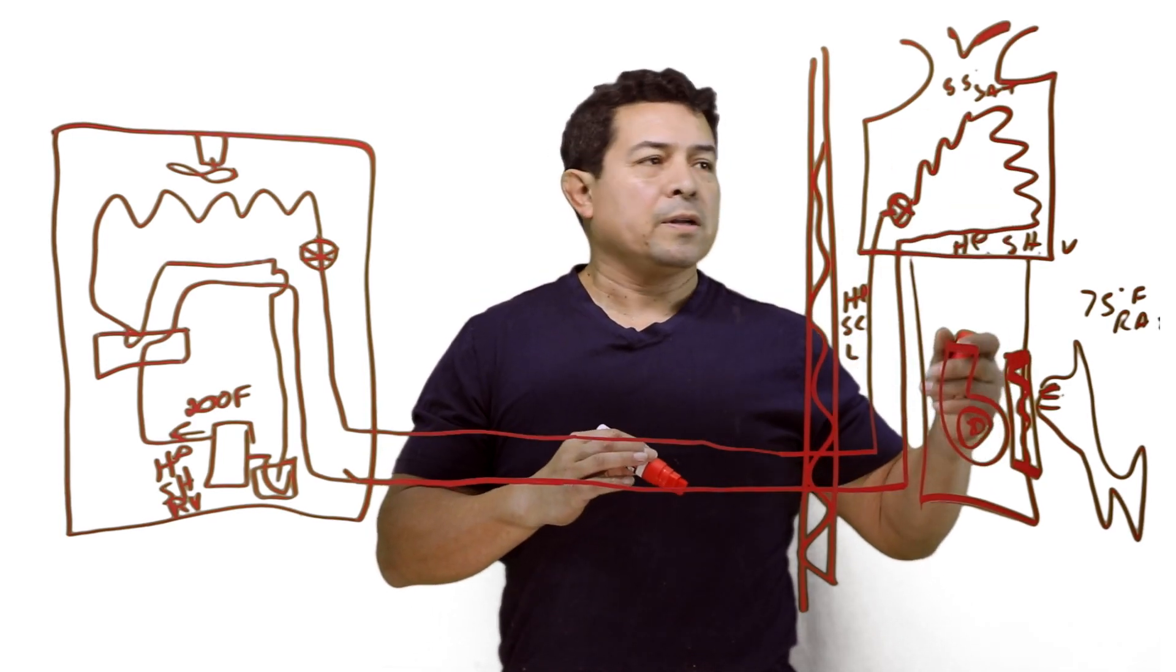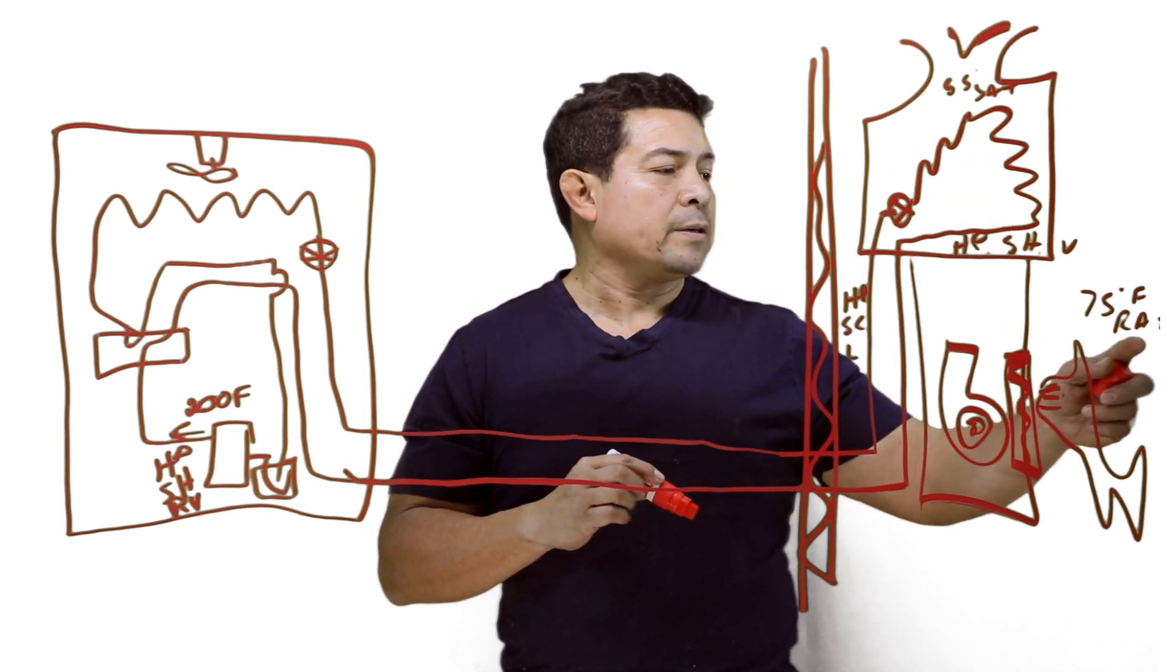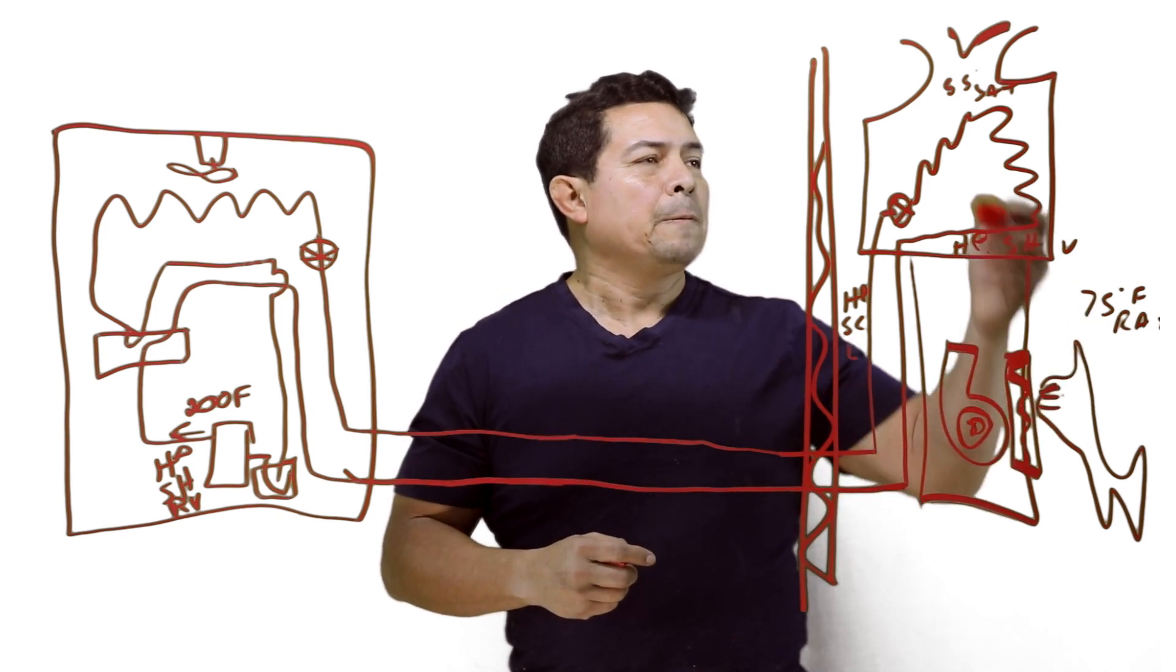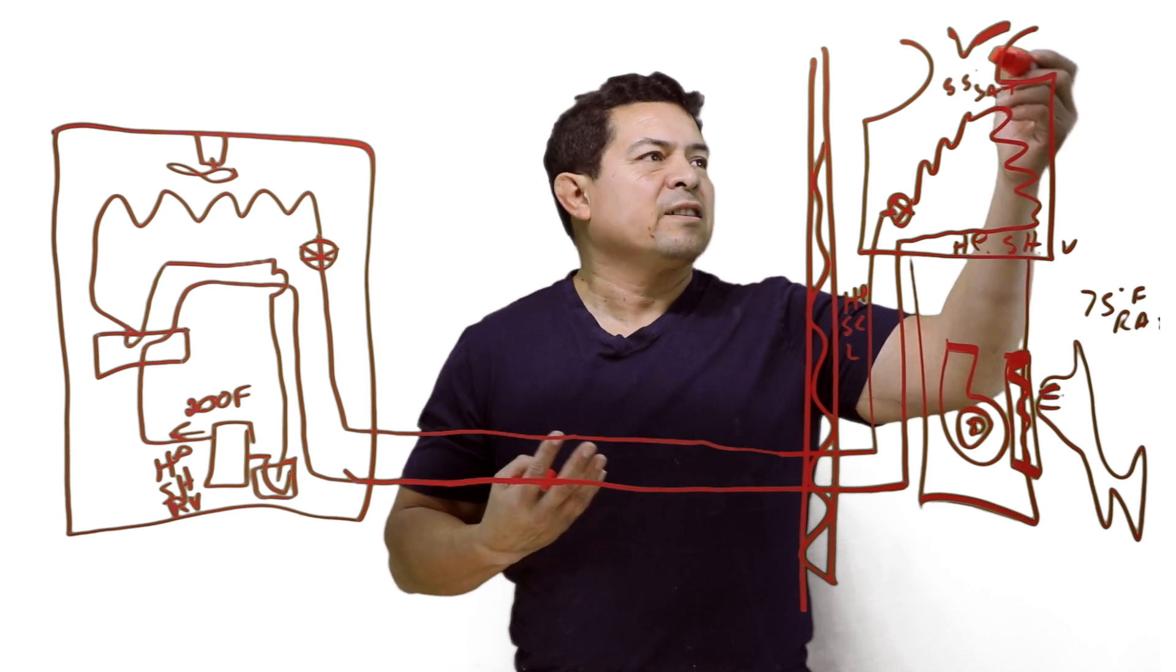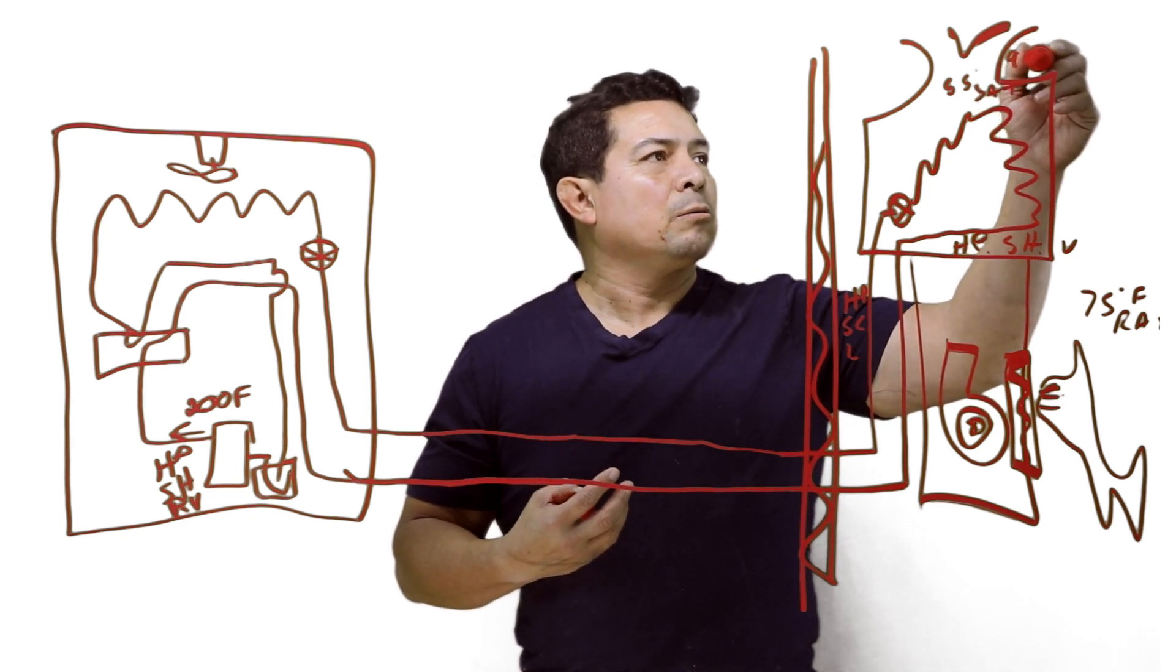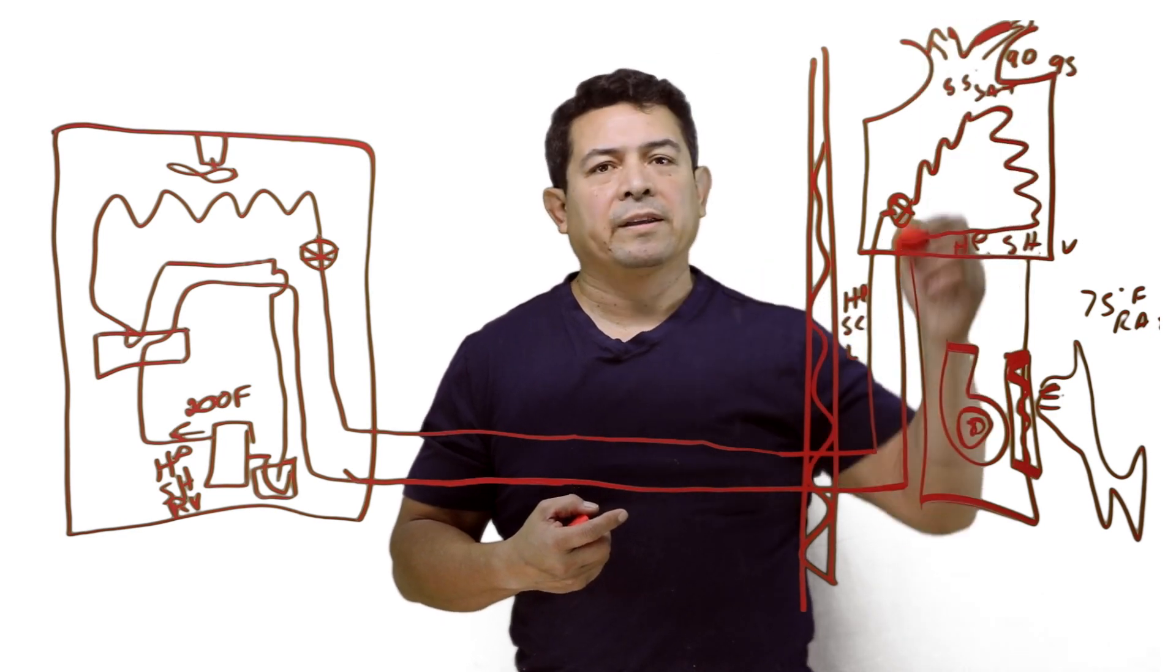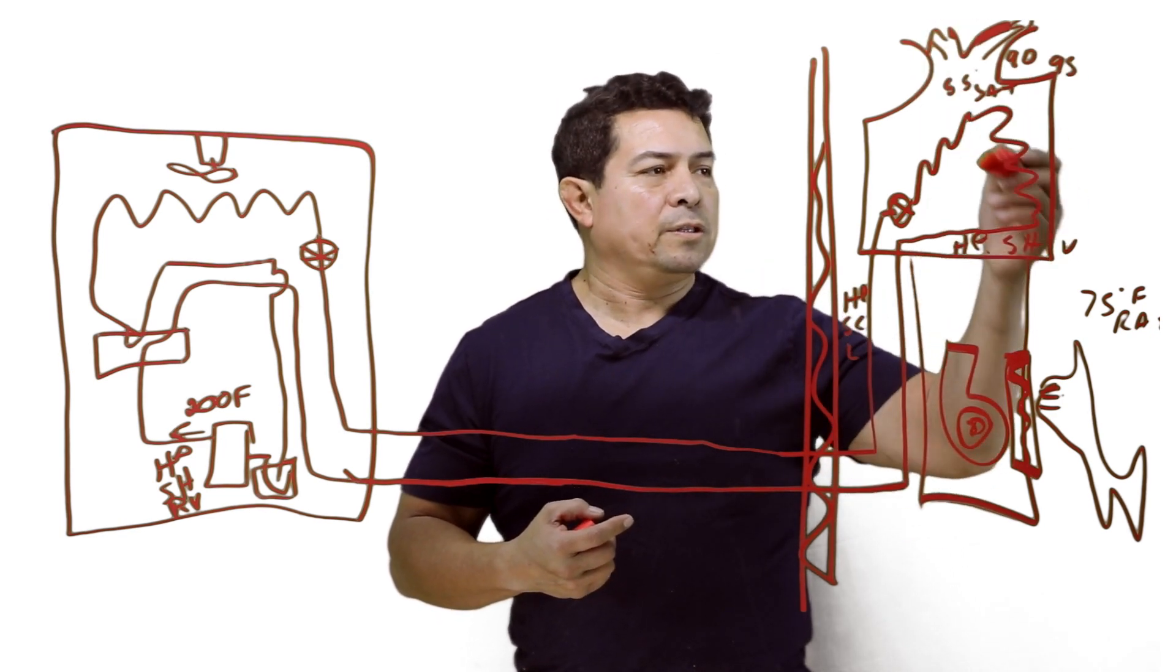It gives off the heat. So now what happens is air is coming in here, let's say it's winter time, so let's say 72, 73 degrees. And it's coming out at around 90 or 95 degrees, heating up the room like this.